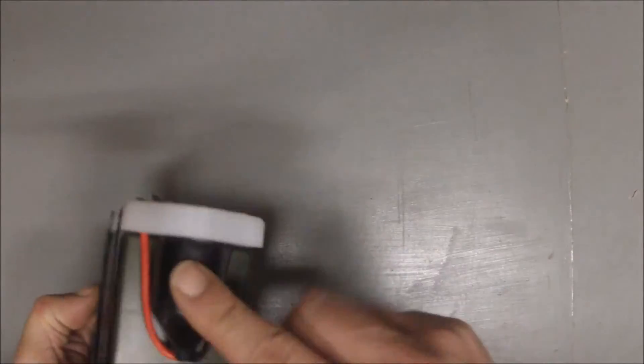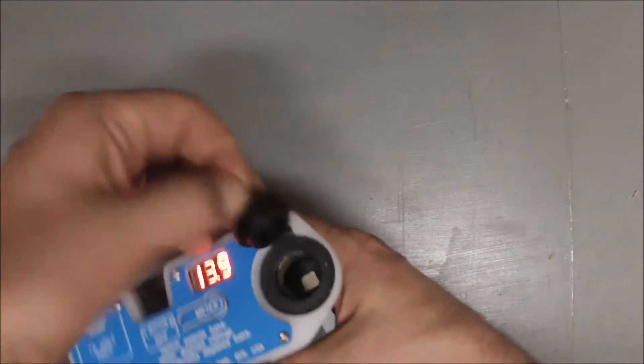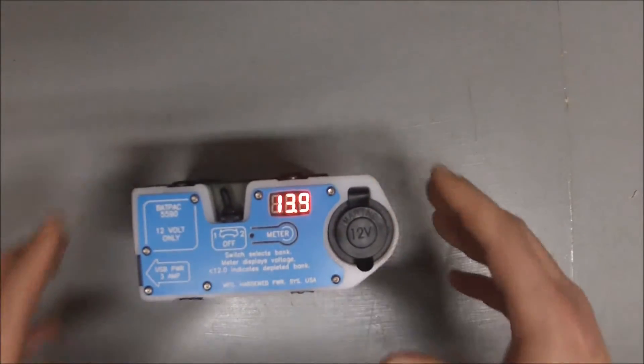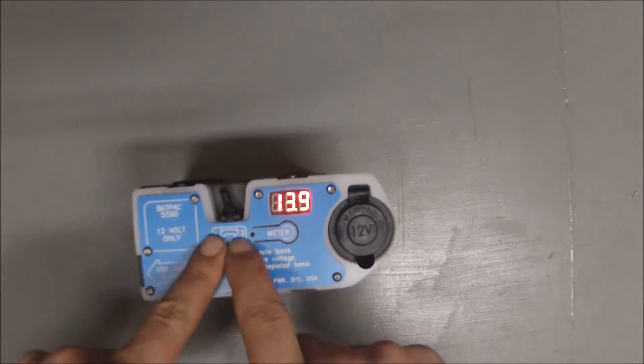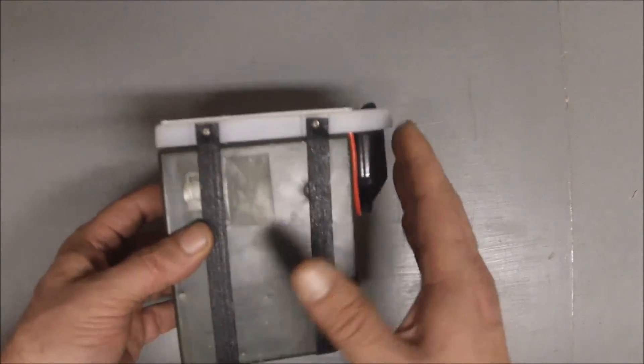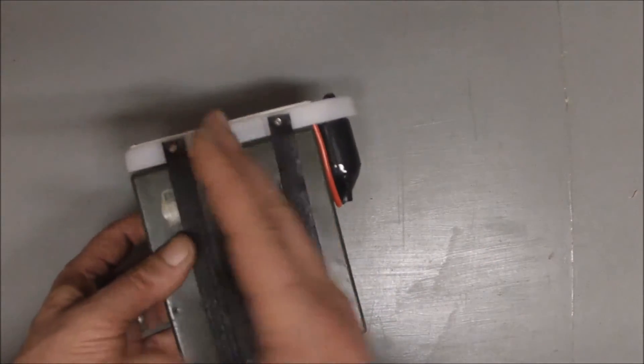It does have a standard automotive style cigarette type outlet and it's able to select between the two internal batteries. One of the unique things about the 5590 is that it's actually composed of two banks.